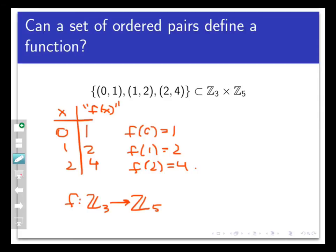I can even see that this function is injective because if two points have different x coordinates or inputs, then the y coordinates are always different. I can also see that this function is not surjective because, for example, the number 0 never appears in the y coordinate, which represents the output.